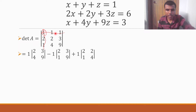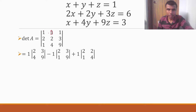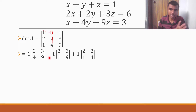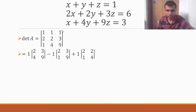Now the second element: 1 into — since we're considering this element, close its row and column. What is left? 2, 3, 1, 9. So minus 1 into det of [2 3; 1 9]. Then plus 1 for the third element in the row. Close its row and column, leaving 2, 2, 1, 4. So plus 1 into det of [2 2; 1 4].